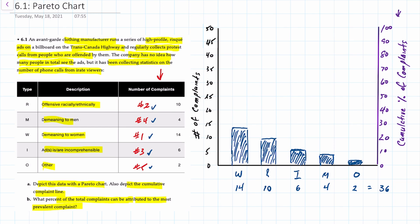So we've completed the first part of requirement A which is to depict the data on the Pareto chart. Now we want to include a cumulative complaint line.